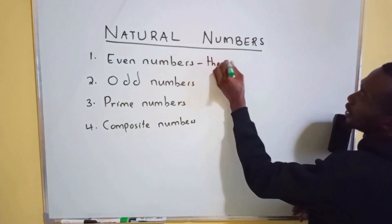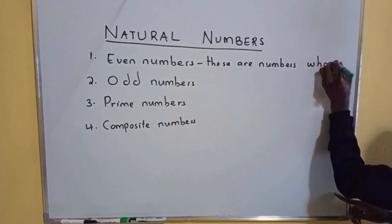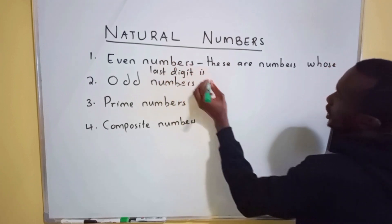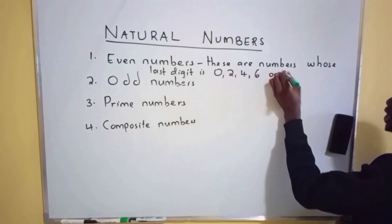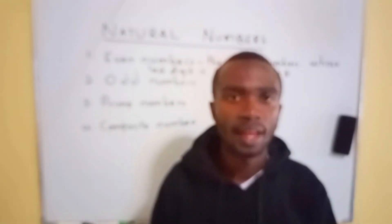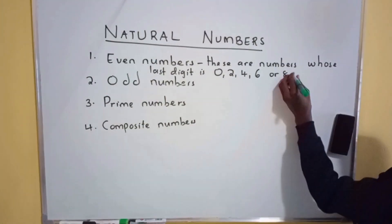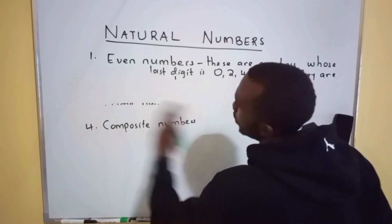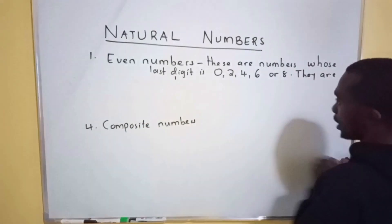So these are numbers whose last digit is zero, two, four, six, or eight. The even numbers are numbers which are divisible by two.